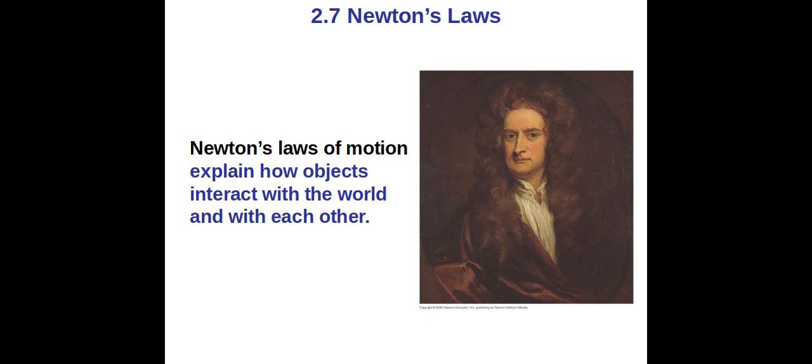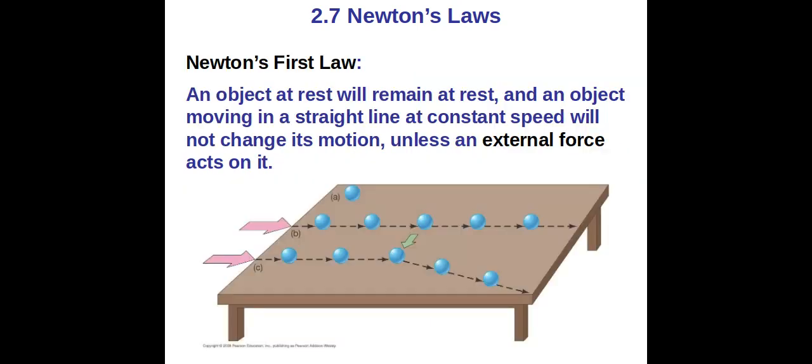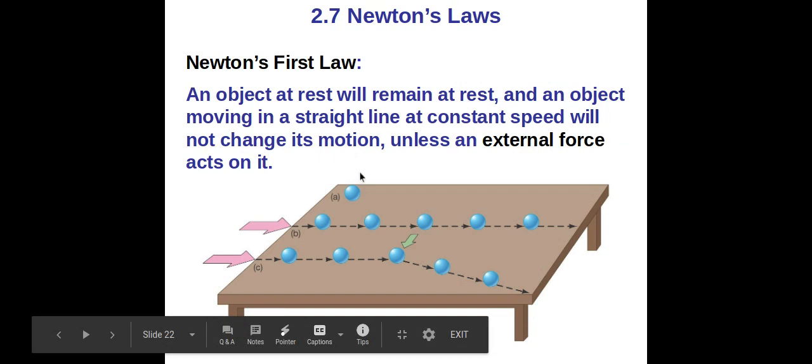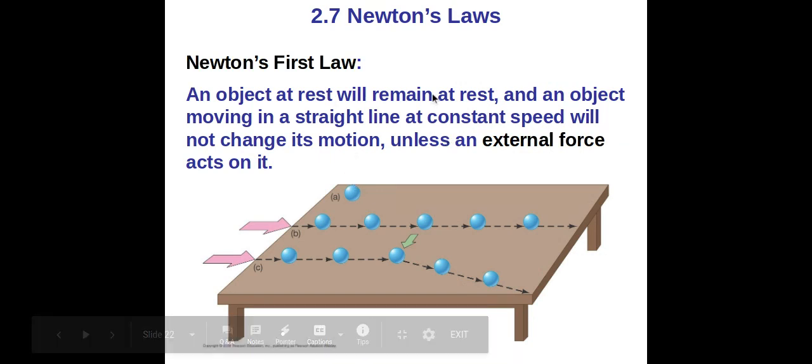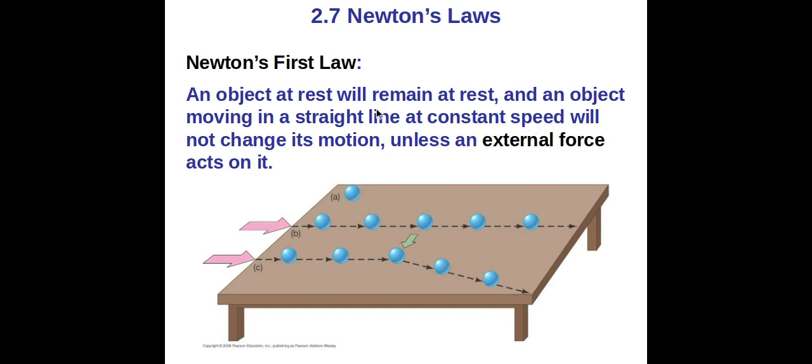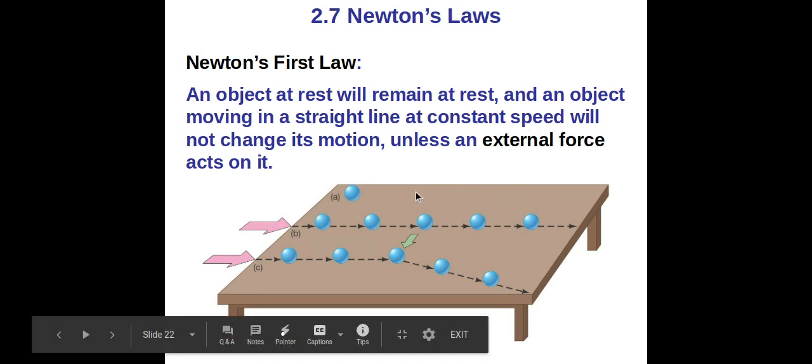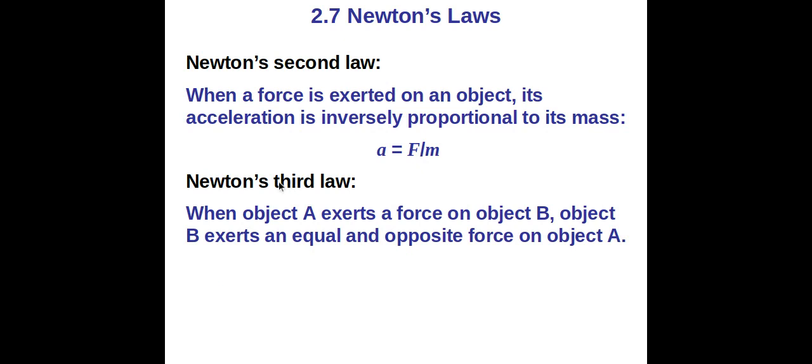Newton's laws of motion explain how objects interact with the world and with each other. First law: object at rest will remain at rest. Object moving in a straight line at constant speed will not change its motion. That's basically inertia. Second law is this equation or some version of it: A equals F over M, or F equals MA, however you want to say it. And Newton's third law is action-reaction.